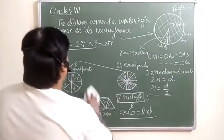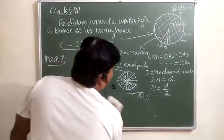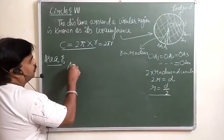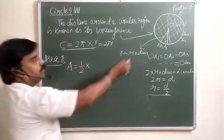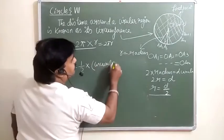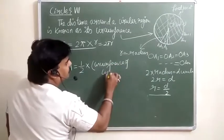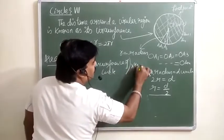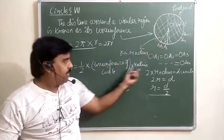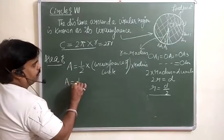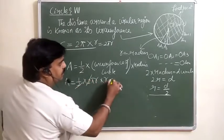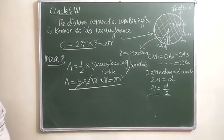Finally, how can you find the area of the circle? The formula is: area A = (1/2) × circumference × radius = (1/2) × 2πr × r. The 2s cancel, giving area = πr². So this is the area of the circle.